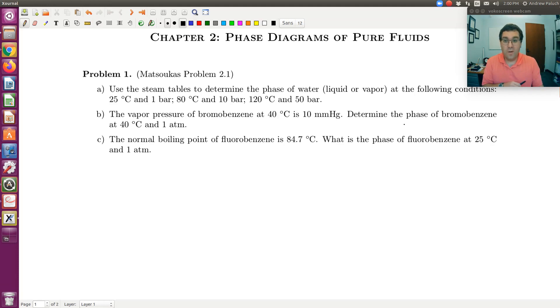So let's start with problem 1. Problem 1A: use the steam tables to determine the phase of water, liquid or vapor, at the following conditions. It looks like we're given a bunch of pressure-temperature combos. So the first thing I'm going to do if I need to identify the phase is I am going to sketch a P versus T phase diagram. Ideally I would sketch a Clapeyron plot, log P versus inverse T, but we'll just do P versus T for now so as not to confuse you.